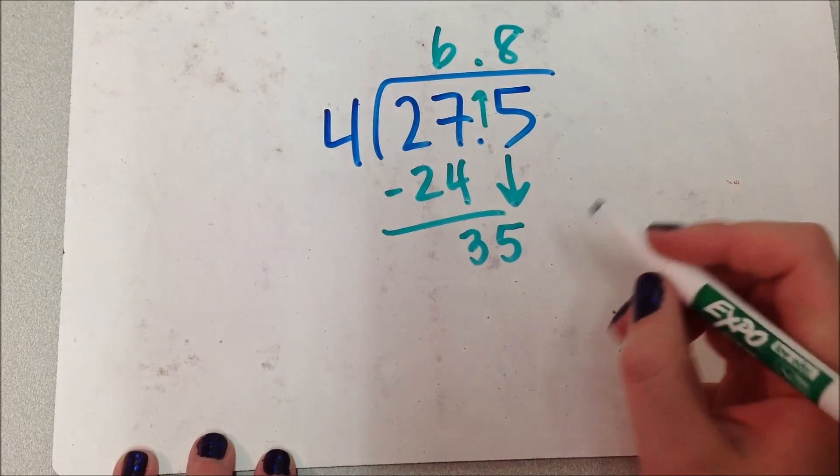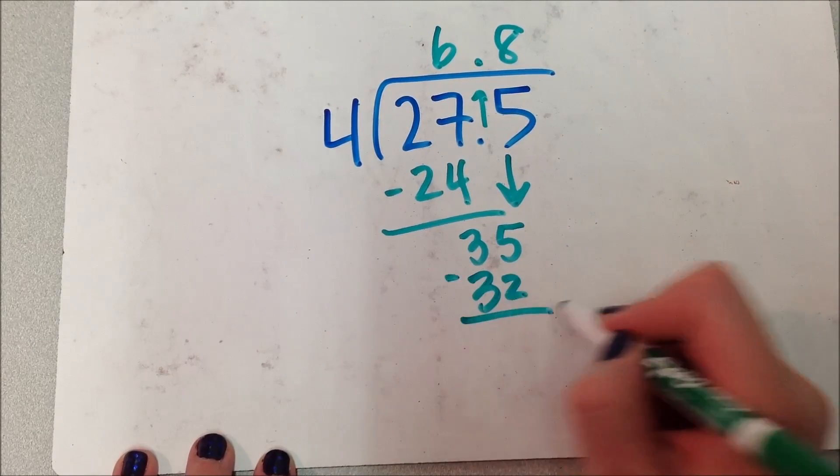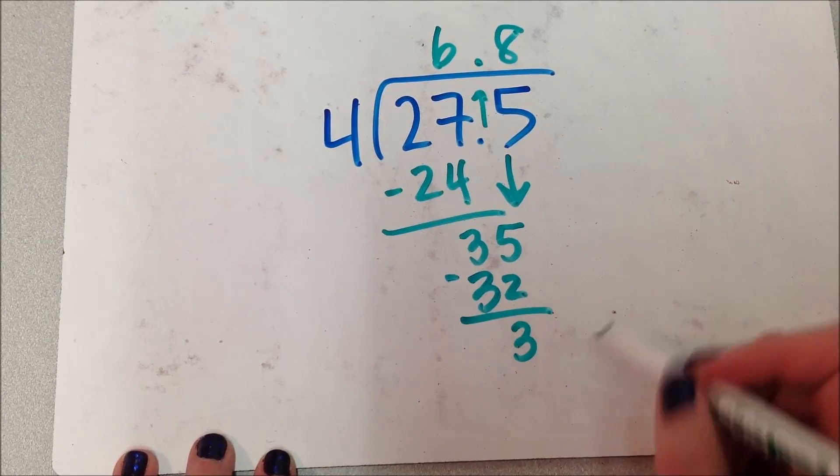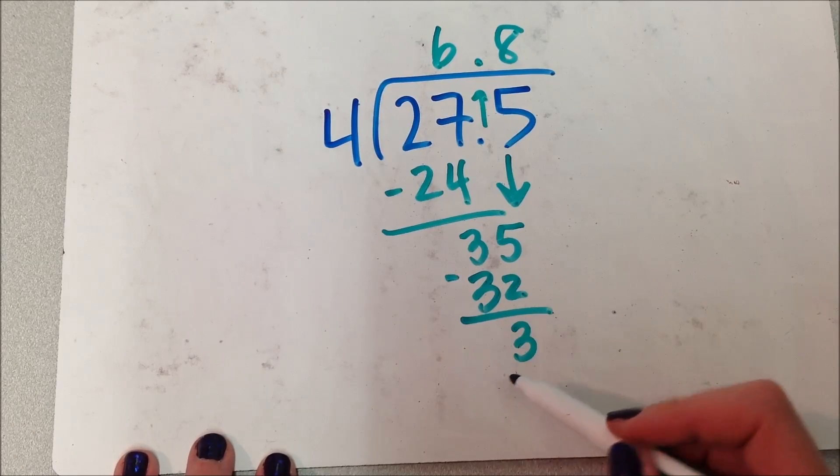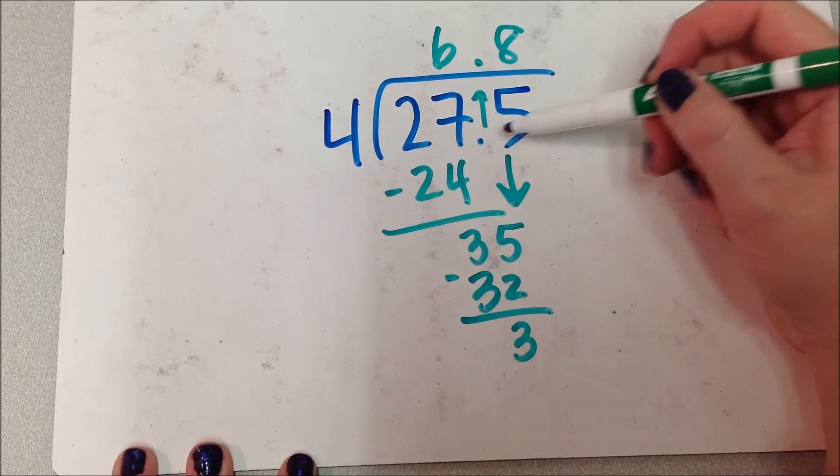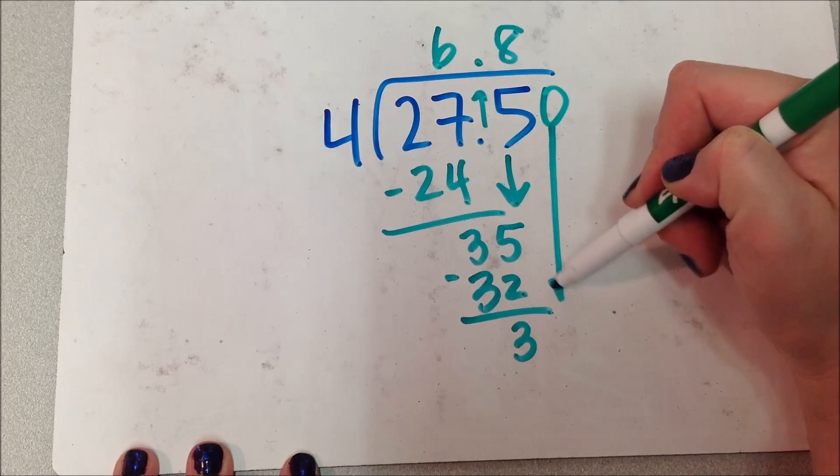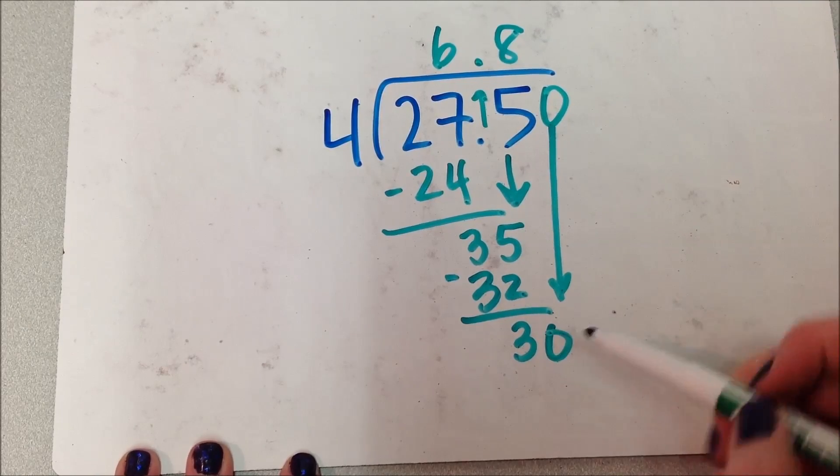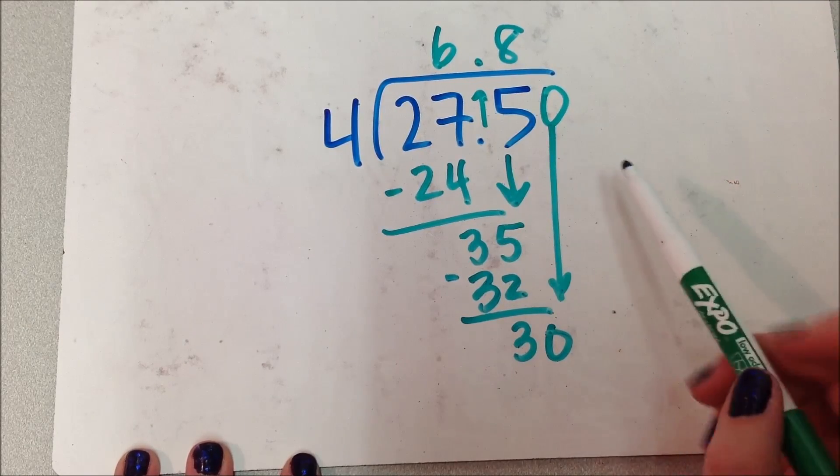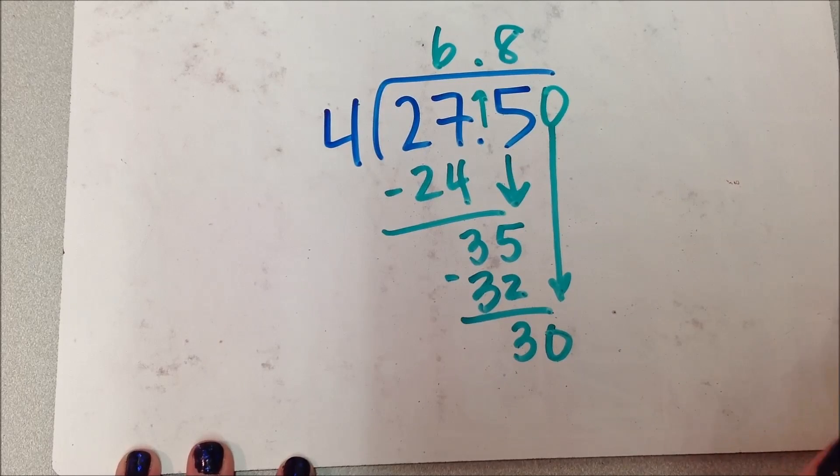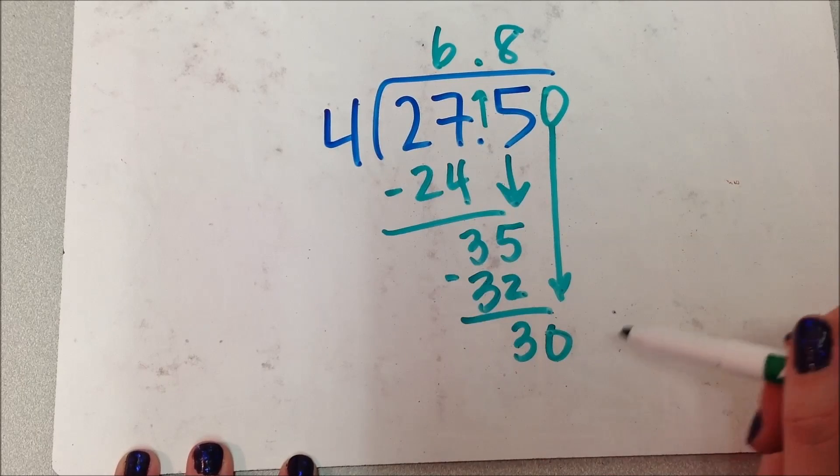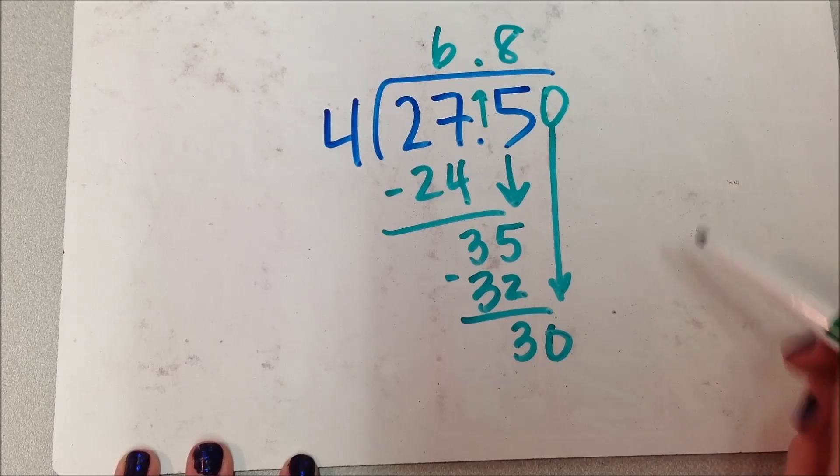4 times 7 was 28. 4 times 8, 32. I have 3 left over. So at this point, I still have a remainder, right? So I've already got a decimal point up here. I can just start dropping in 0's. So this one, I don't need to add the decimal point, but I can add as many 0's after here as I need to in order to sort of run out of remainder. Okay.